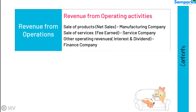Contents of statement of profit and loss. Revenue from operations shall disclose separately: sale of products, sale of services, and other operating revenues.